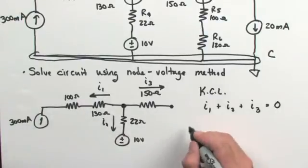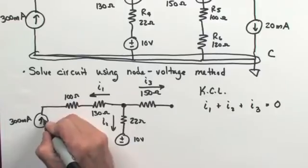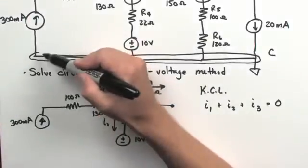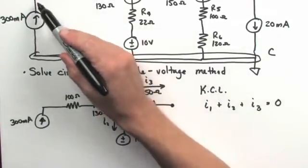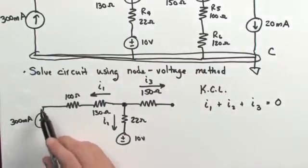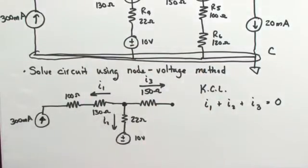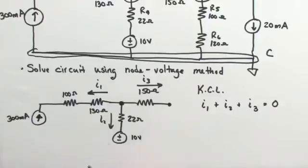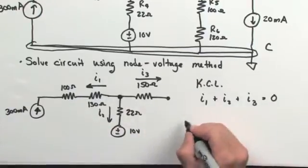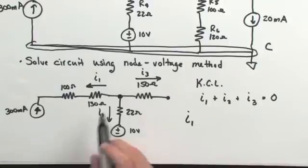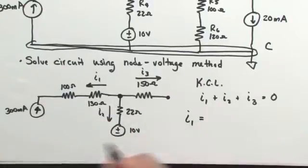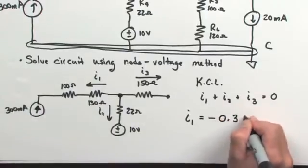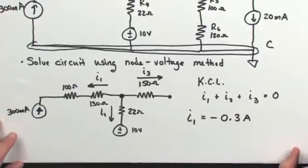I'm going to call the current through each path I1, I2, and I3. Using Kirchhoff's current law, the sum of all currents leaving the node must equal zero — we can't have any accumulation of charge. I1 is an easy case because it's already given to us. The 300 milliamp current supply is always providing 0.3 amps into node A. Based on our assumption that current leaves the node, I1 is written as negative 0.3 amps.